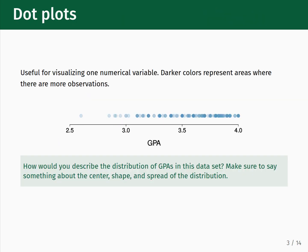We will be starting simple, focusing on one-dimensional or single-variable numerical distributions. A simple way to visualize these distributions is the dot plot. In a dot plot, each value gets represented as a translucent point along a one-dimensional line. Darker colors represent regions with a higher density of observations. Here we have a distribution of student GPAs plotted.